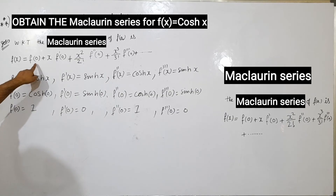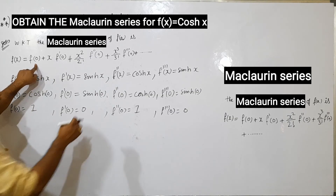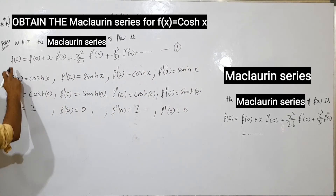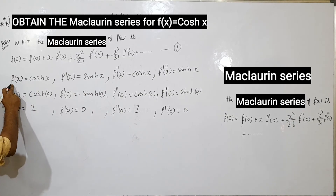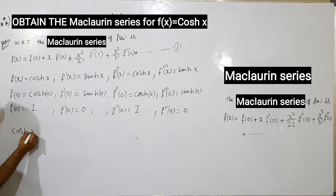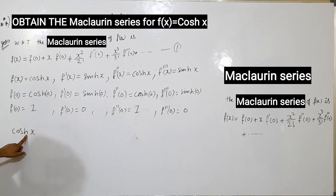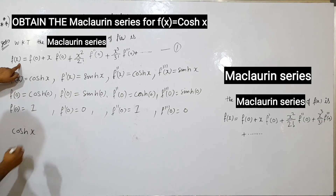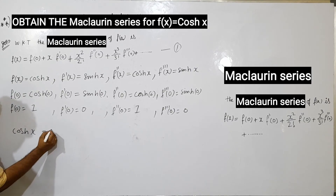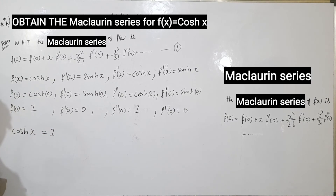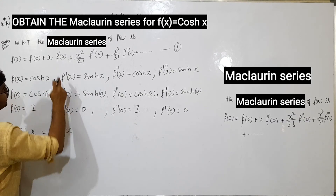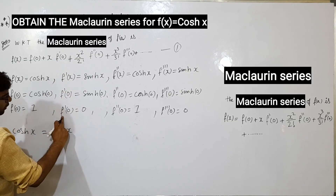We will substitute into the formula now. Substituting in the equation: f(x) = cosh(x). The hyperbolic function f(0) = 1.